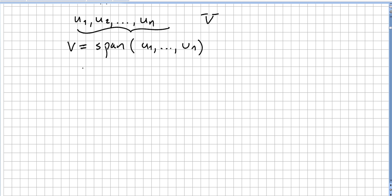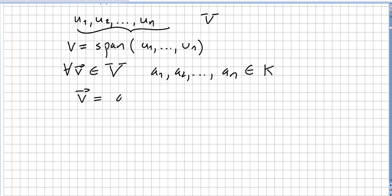Or, as we said in a previous video, we say that for every vector v in the vector space V, if there are scalars a1, a2, ..., an in the field, such that vector v can be written as a linear combination of these scalars and these vectors: a1·u1 plus a2·u2 plus ... plus an·un.